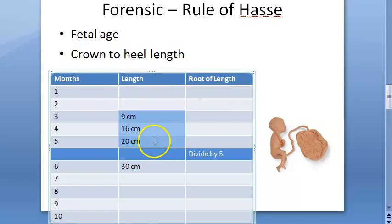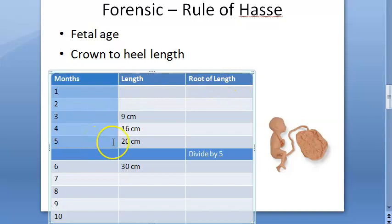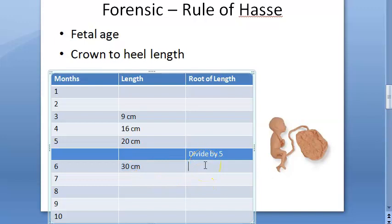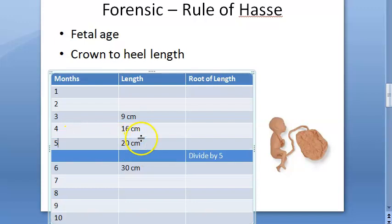Based on this length, you can estimate the age in months. For the first five months, the square root of the length gives you the age in months. For the next five months (months six through ten), you divide the length by five to get the age. For example, if you get a length of 30 centimeters, dividing by five gives six months.